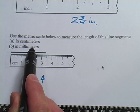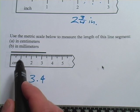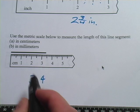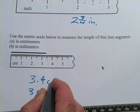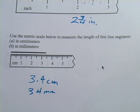If I want to put this in millimeters, each centimeter is 10. So I would count 10, 20, 30, 1, 2, 3, 4. So this would be 34 millimeters. Oops, and this one was centimeters. So those are some problems with the inch ruler and the centimeter ruler.